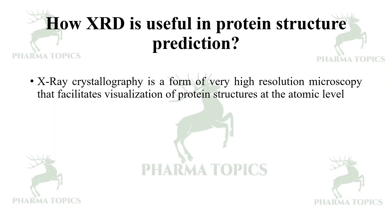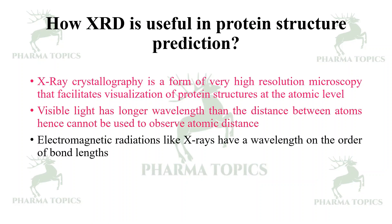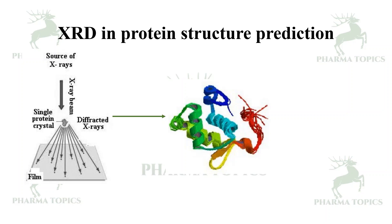X-ray crystallography is a form of very high resolution microscopy that facilitates visualization of protein structures at the atomic level. Visible light has a longer wavelength than the distance between atoms, hence cannot be used to observe atomic distances. Electromagnetic radiations like X-rays have a wavelength on the order of bond lengths.